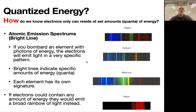So how do we get these? We bombard an element with photons of energy — they can be electrons, sunlight, or thermal energy. Somehow we give it a bunch of energy, and those electrons are going to get excited and they make these bright lines.